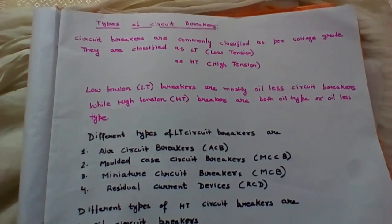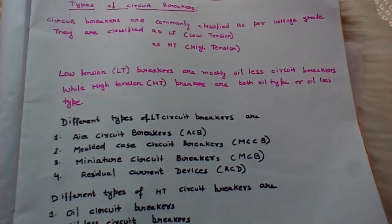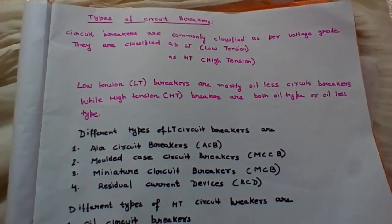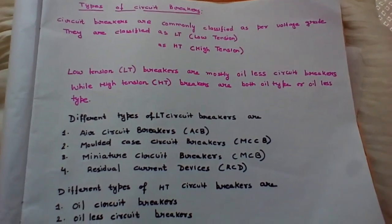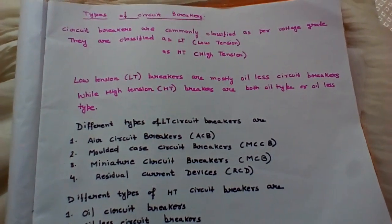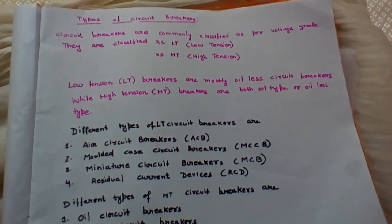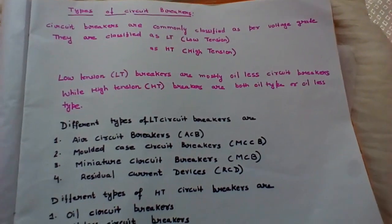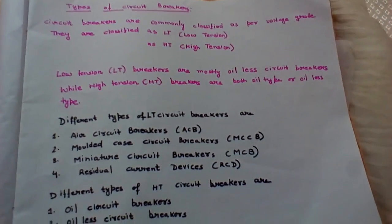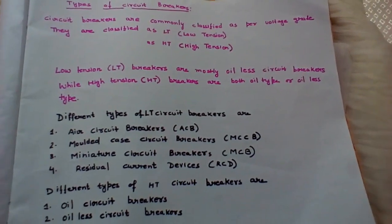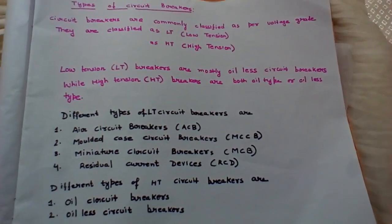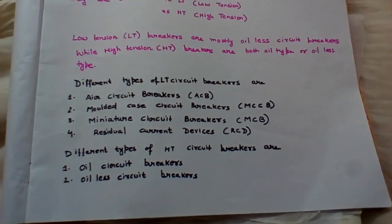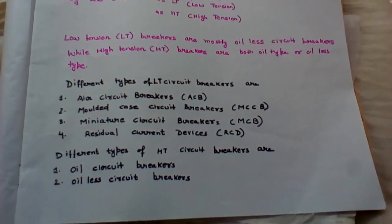Low tension circuit breakers are mostly oil-less, because the dielectric strength of oil is higher. Wherever high voltage application is required, we use oil as a dielectric medium. For low tension applications we don't need oil, so low tension breakers are mostly oil-less. Circuit breakers used for high voltage can be oil type or can use some gas as dielectric or arc quenching medium.